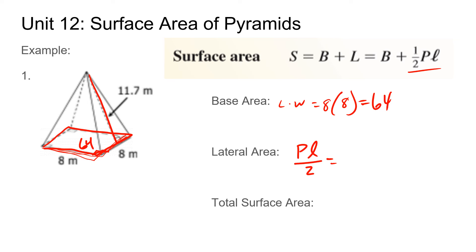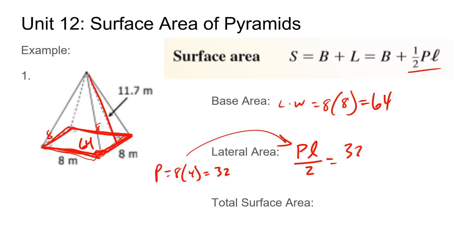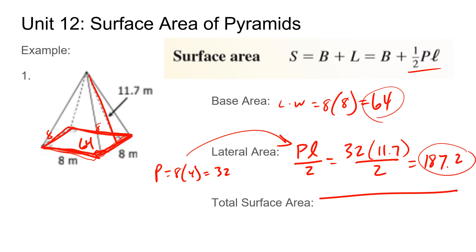To find the area of the square base, we do 8 times 8, which is 64 square meters. For the lateral area, we use perimeter times slant height divided by two. The slant height given is 11.7. The perimeter of the base is 8 times 4, which is 32. So we do 32 times 11.7 divided by 2, which gives a lateral area of 187.2 square meters. Adding the base area of 64 to the lateral area of 187.2, the total surface area is 251.2 square meters.